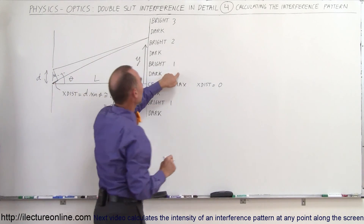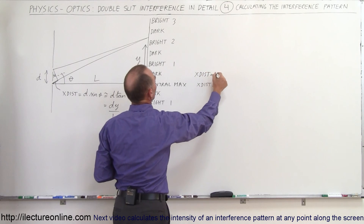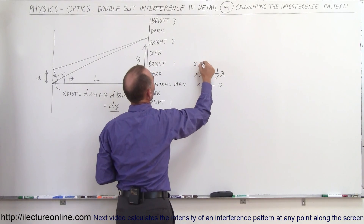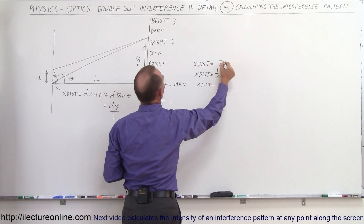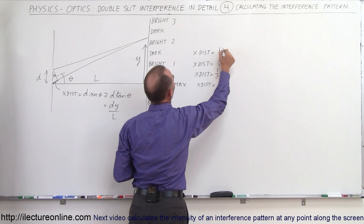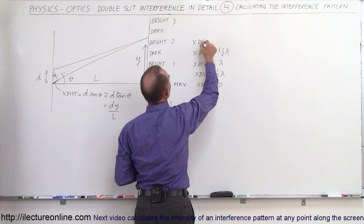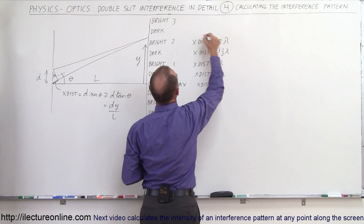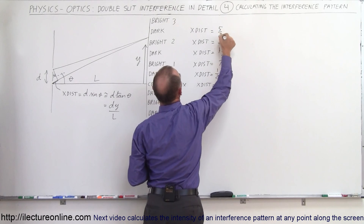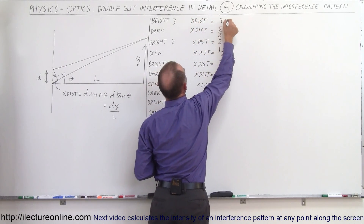The extra distance traveled by one ray compared to the other: at the first dark spot it equals half a wavelength; at the first bright spot it equals one full wavelength; at the second dark spot it equals one-and-a-half wavelengths, or three-halves lambda; at the second bright spot it equals 2 lambda; at the third dark spot it equals 5-halves lambda; and at the third bright spot it equals 3 lambda, and so forth.